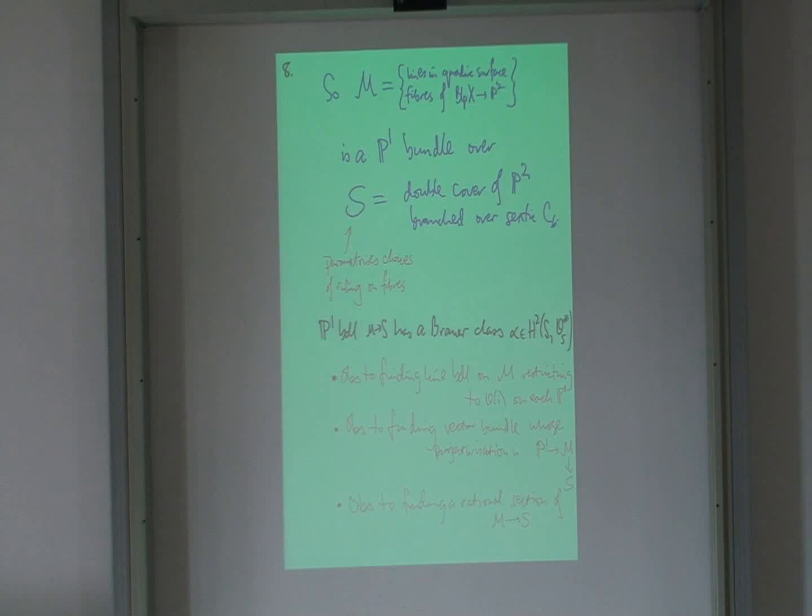So there's many ways of seeing that. Either you can try and find, so getting this P1 bundle to be the projectivization of a vector bundle is equivalent to finding an O1 on each fiber, gluing together to give me a line bundle on the whole thing. Okay? So locally I can find an O1 line bundle on each fiber. But then when I try to glue them together, I get a cocycle. And that gives you a line bundle on that line bundle on each fiber.